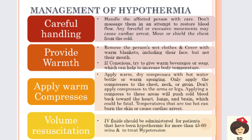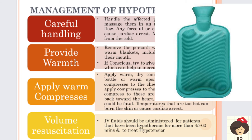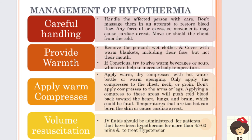Apply warm compressors like hot water bottles or warm sponging. Hot water can be put inside a bottle and kept on the patient's body covered with a thin cloth. Warm sponging means dipping a sponge cloth in hot water and applying compressors on the chest, neck, and groin. We must not apply on the arms and legs because cold blood would be pushed back into the heart, lungs, and brain which can be fatal, and too-hot temperatures on extremely cold areas can burn the skin or cause cardiac arrest.